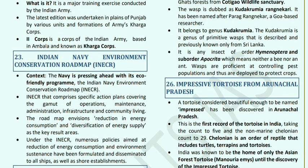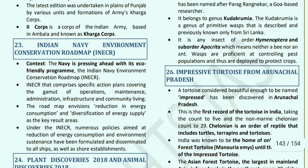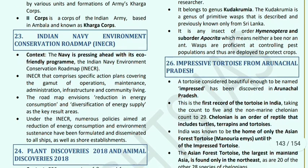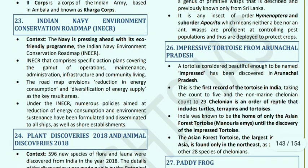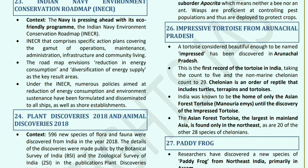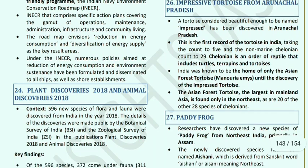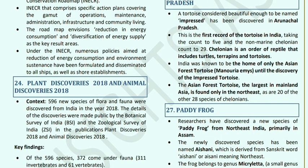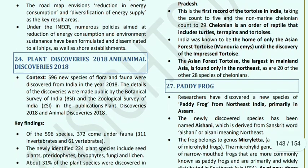Indian Navy Environment Conservation Road Map: the Navy has created an eco-friendly program. Impressed Tortoise from Arunachal Pradesh: Arunachal Pradesh yielded an impressed tortoise — a new finding. This is the first record of this tortoise in India, taking the freshwater and non-marine chelonian count to 29. Chelonian is an order of reptiles that includes turtles, terrapins, and tortoises. India was previously known for the Asian Forest Tortoise, which is the largest in mainland Asia and found mainly in the northeast.